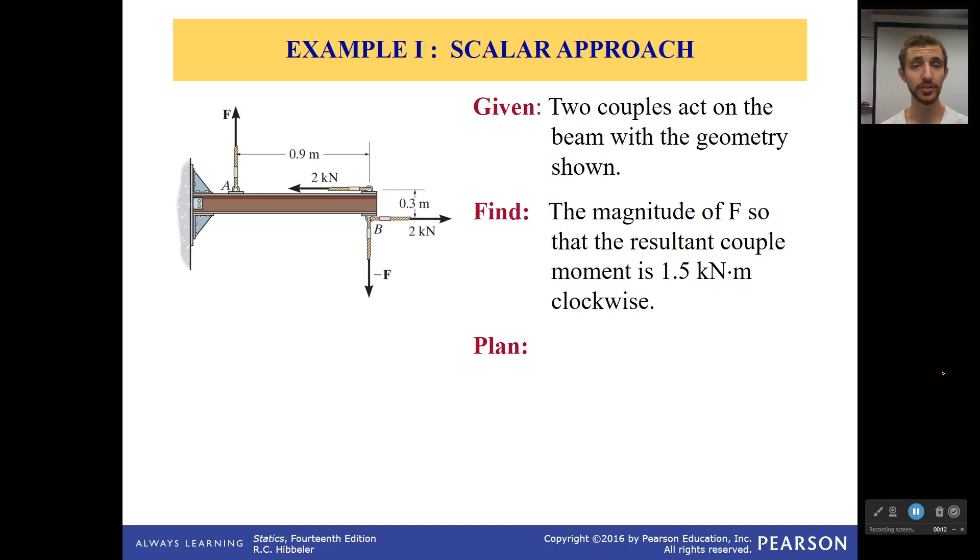So what you see right here is we have two couples acting on this beam. Now this is static, so that beam is in equilibrium, which means they have to cancel each other. We're going to use that fact to then calculate the force that we don't understand.